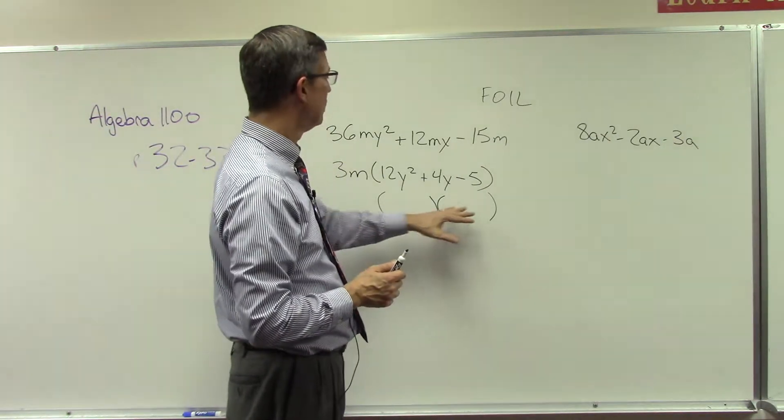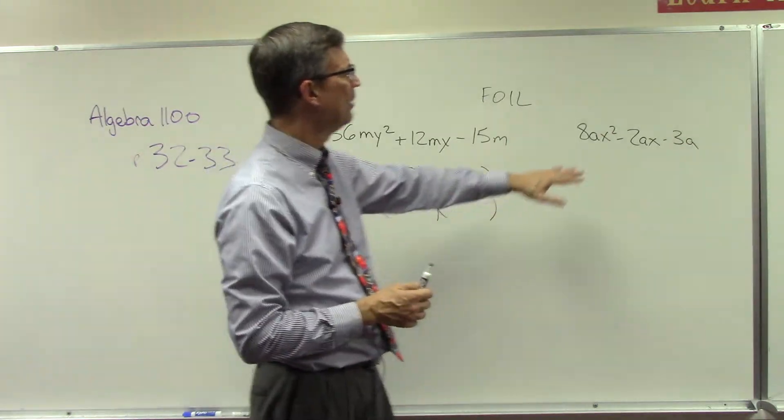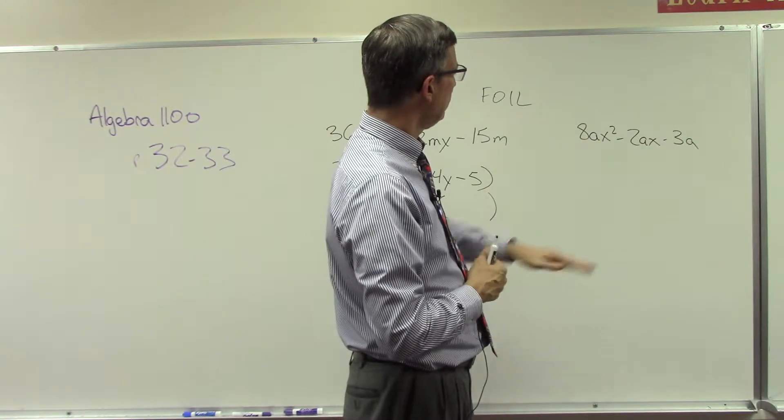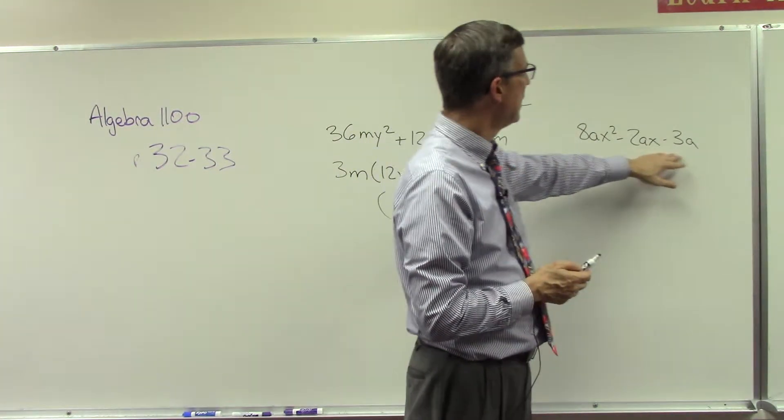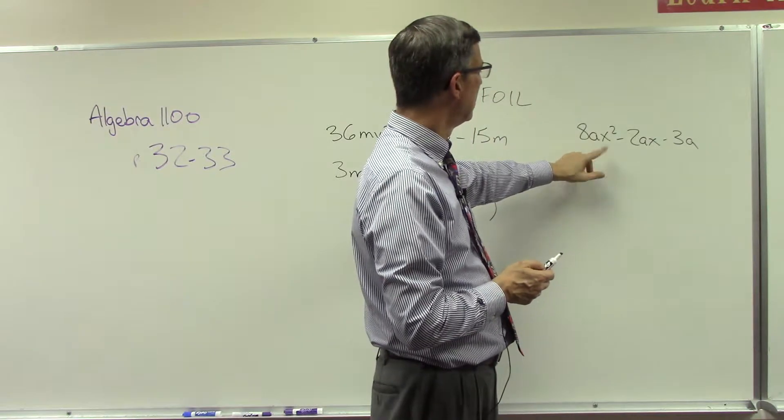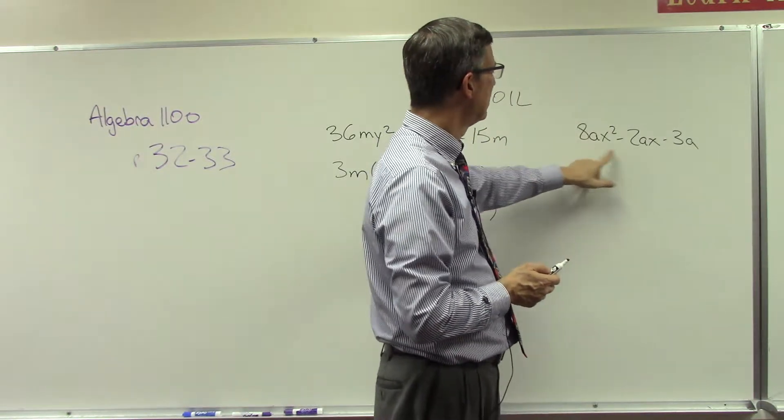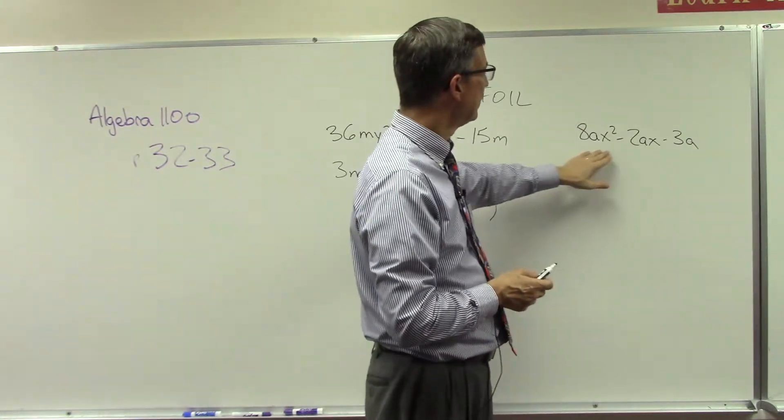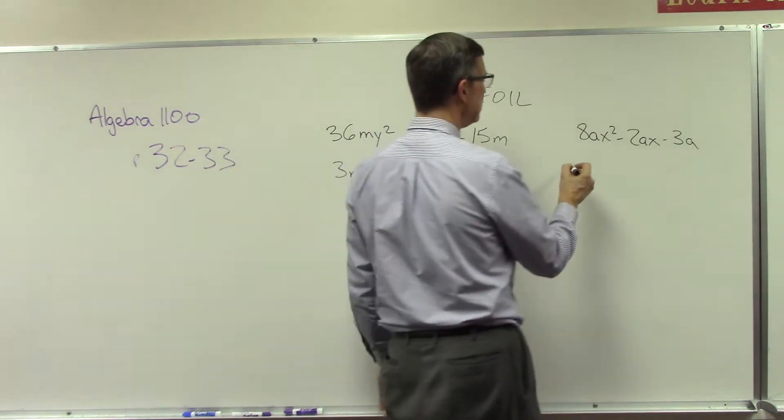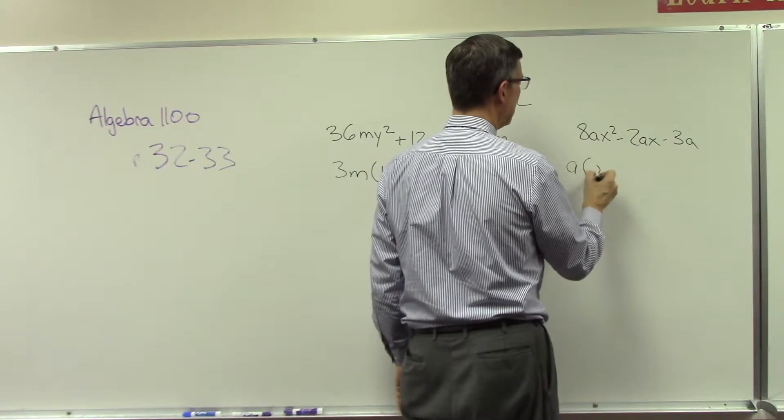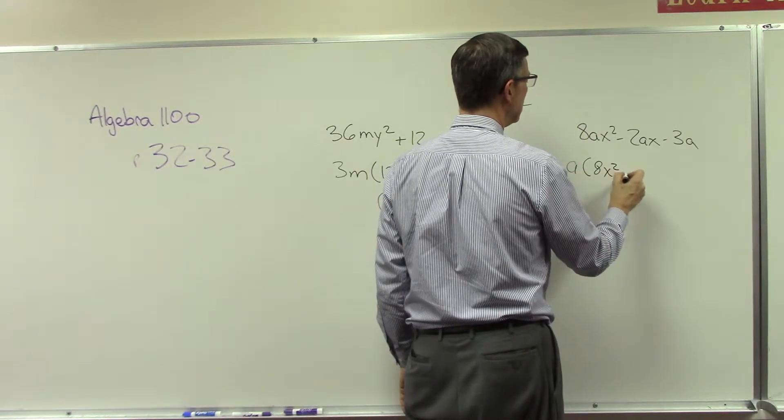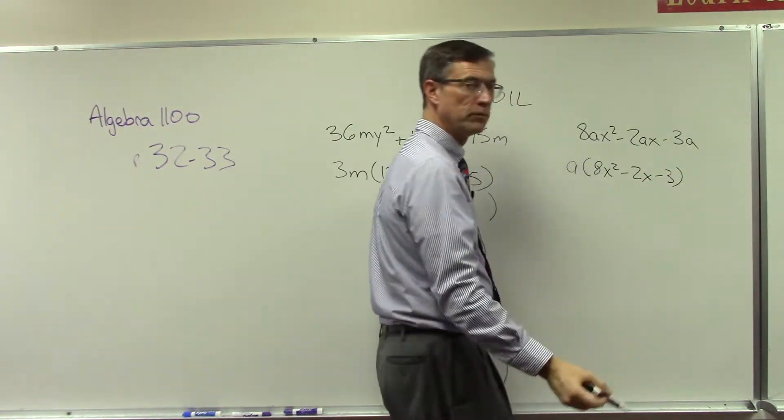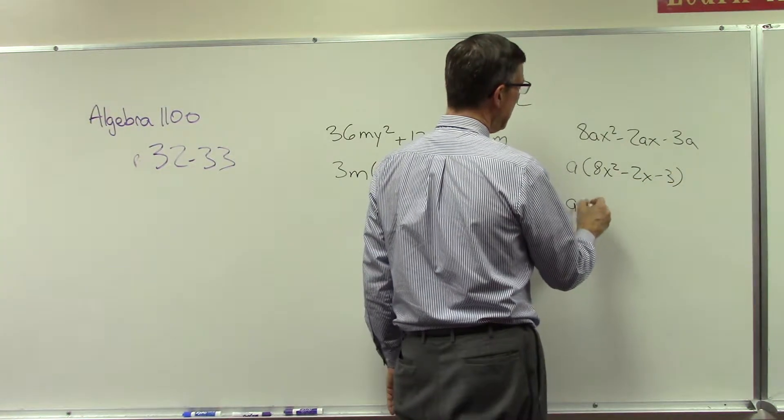Let's see if we can find the common factor here. Well, they all have an 'a' in it, but it doesn't look like I could factor 2 out of these two. We don't want to do that - we need to factor something out of all three terms. So the only thing that will come out of all of them is 'a'. That's our first step. Then we're left with 8x² - 2x - 3. Leave the 'a' as part of the answer.